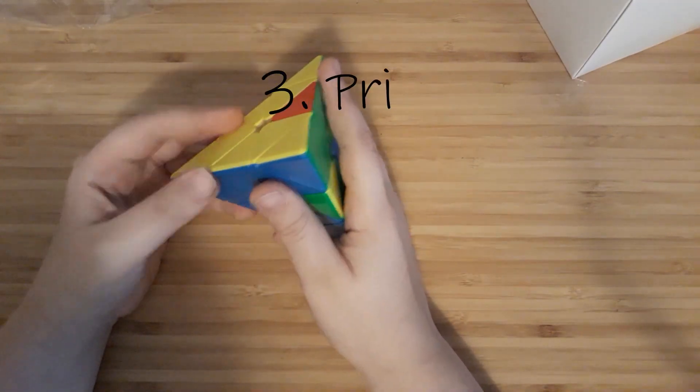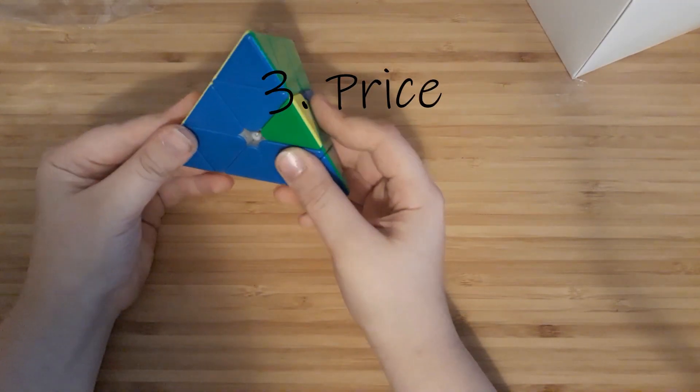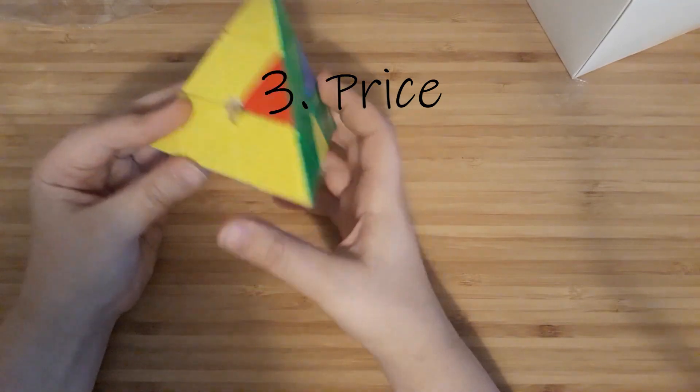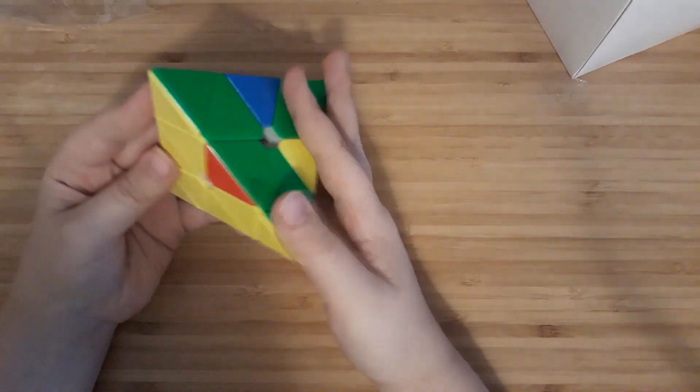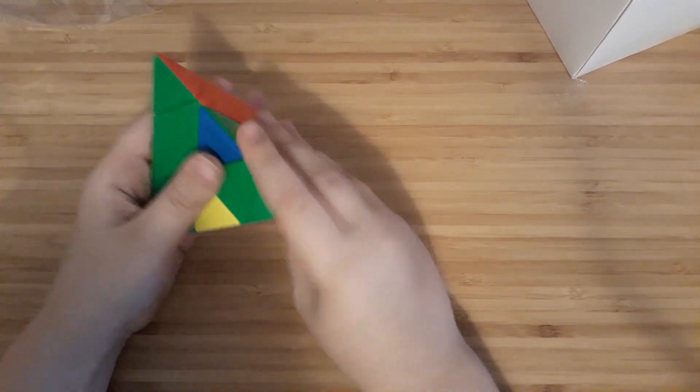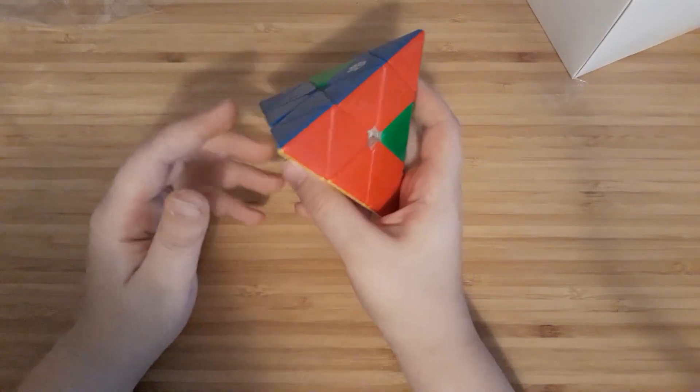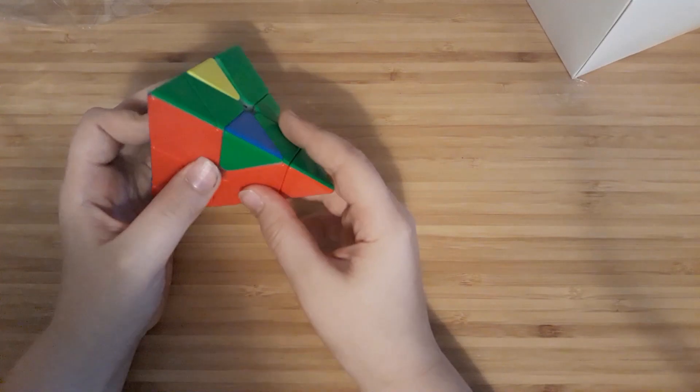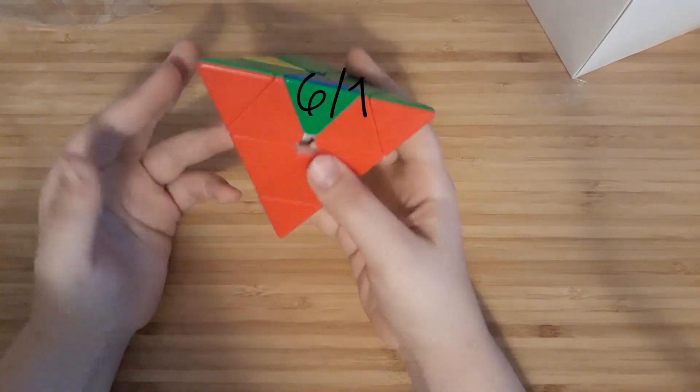So next is price. This thing was $20, which remember, again, is kind of like the apple of cubes. So, you know, again, it's pretty expensive for what it is, and it's really nice. It's nice and magnetic. I actually give this a pretty good score compared to my three by three. I would give this a six out of 10.